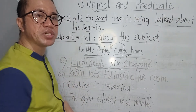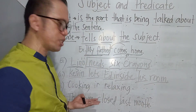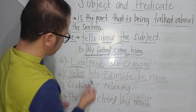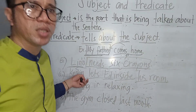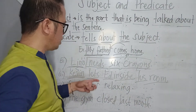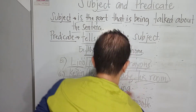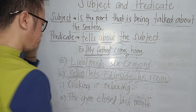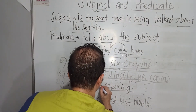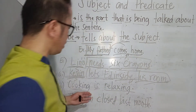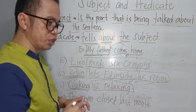Next, number six: 'Given lets add inside his room.' In this sentence, 'Given' is the one spoken of — it is being talked about — so 'Given' is our subject, and 'lets add inside his room' is our predicate. Number seven: 'Cooking is relaxing.' 'Cooking' is our subject, and 'is relaxing' is our predicate.